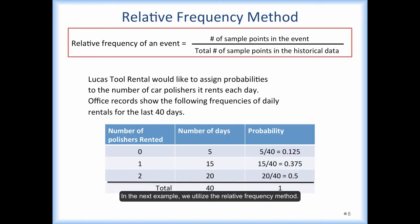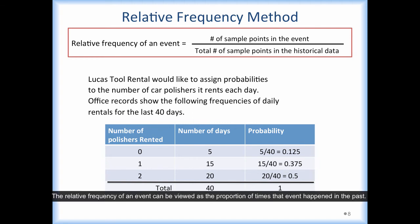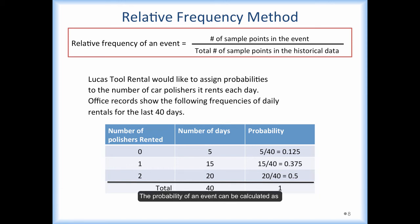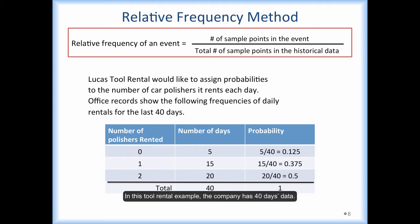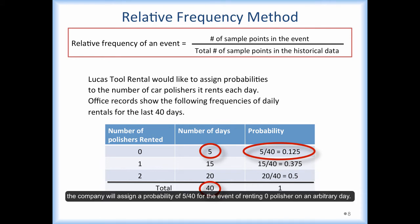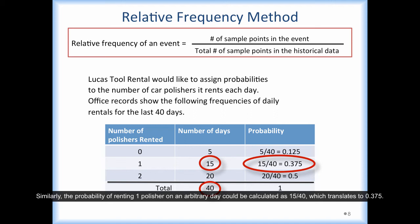In the next example, we utilize the relative frequency method. The relative frequency of an event can be viewed as the proportion of times that event happened in the past. The probability of an event can be calculated as the number of sample points in the event, divided by the total number of sample points in the historical data. In this tool rental example, the company has 40 days of data. Because 5 out of 40 days it rented 0 polishers, the company will assign a probability of 5 over 40 for the event of renting 0 polishers on an arbitrary day. Similarly, the probability of renting 1 polisher on an arbitrary day could be calculated as 15 over 40, which translates to 0.375.